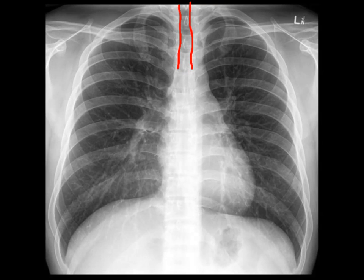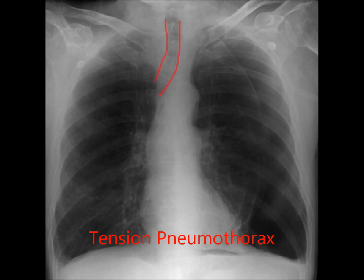Step five: now we want to start looking at the details. The most commonly used system is the alphabetic approach — A, B, C, D, E, F, G, H, I — as it's easy to remember and means you're unlikely to miss anything. Let's start with A, which stands for airway. A normal airway is central and open. An airway that deviates to one side may be due to a tension pneumothorax.